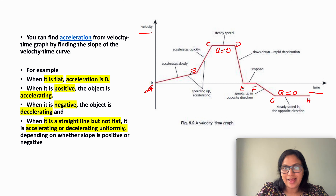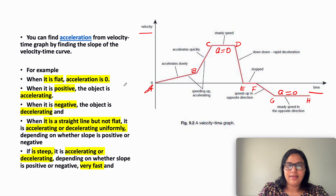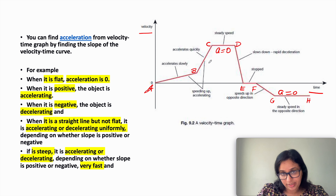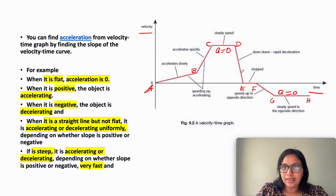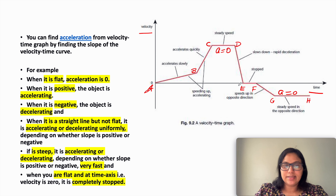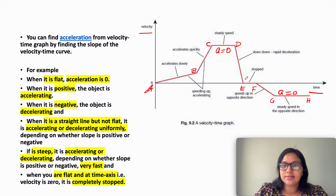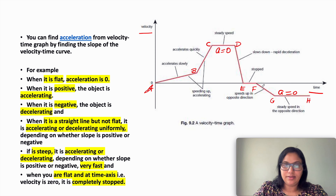From A to B the object accelerates slowly. If the line is steep, it is accelerating or decelerating very fast — from B to C it accelerates quickly, and from D to E it decelerates quickly. When the graph is completely flat and lies on the x-axis, the object is completely stopped. This is how we describe the motion of an object using a velocity-time graph.